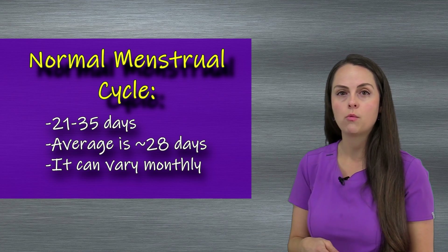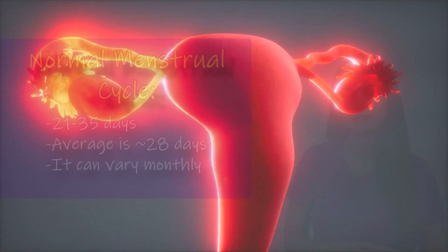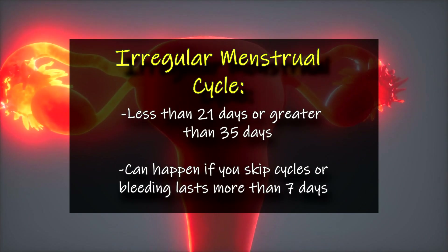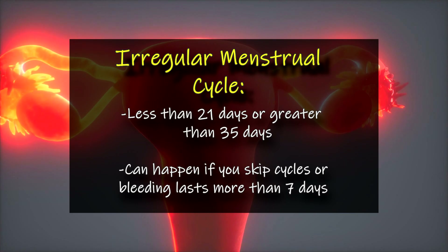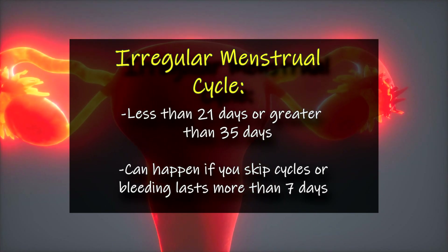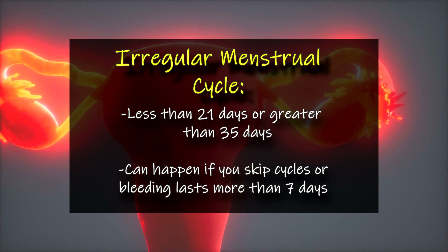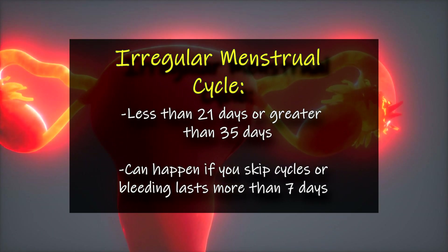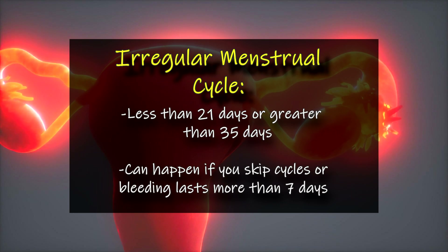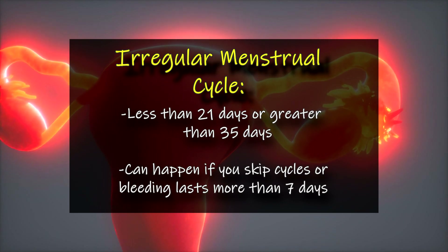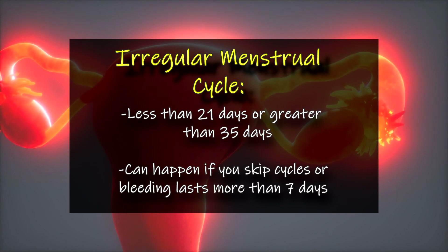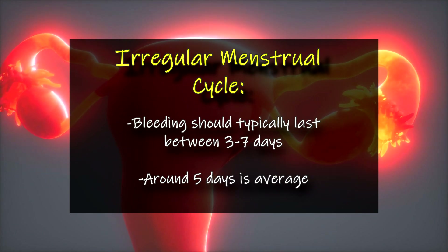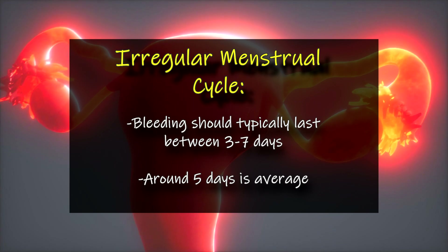You may be wondering what is considered an irregular menstrual cycle. If your cycle is less than 21 days or greater than 35 days — and this can happen if you're missing menstrual cycles, like skipping a month here or there, or if the bleeding part of your menstrual cycle is lasting longer than seven days — it can make your cycle longer. Remember, the bleeding part of your cycle should last anywhere between three to seven days, with an average of five.